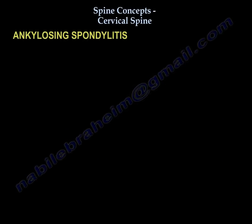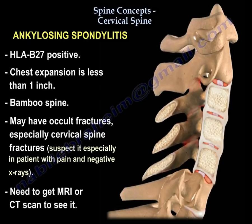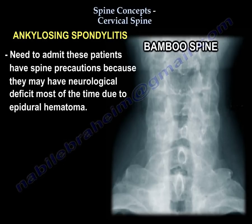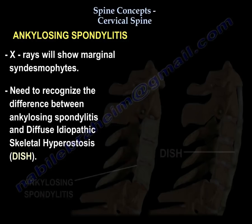Another important topic is ankylosing spondylitis. HLA-B27 is positive, chest expansion is less than one inch, and you get a bamboo spine. You may have occult fractures, especially in the c-spine — suspect this in a patient with pain and negative x-rays. You need an MRI or CT to see it, admit the patient with spine precautions because they can develop neurological deficit, most often from epidural hematoma. X-rays will show marginal syndesmophytes.